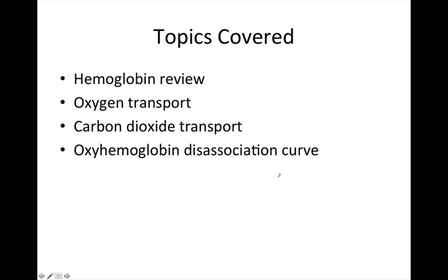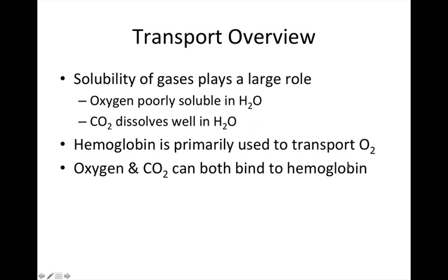The topics we'll cover include a basic review on hemoglobin — not too in-depth, because if you're on the respiratory system you've already gone through the cardiovascular system and should have a basic working knowledge of hemoglobin. We'll talk about factors that affect oxygen loading and unloading, carbon dioxide loading and unloading, and the oxyhemoglobin dissociation curve, which is a visual representation of how this process works.